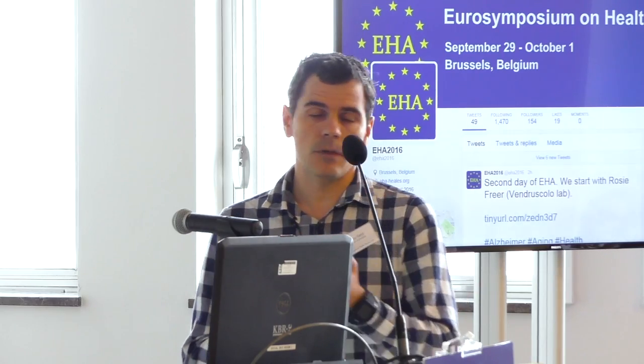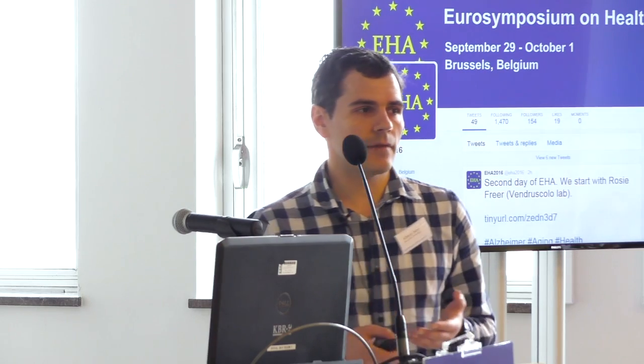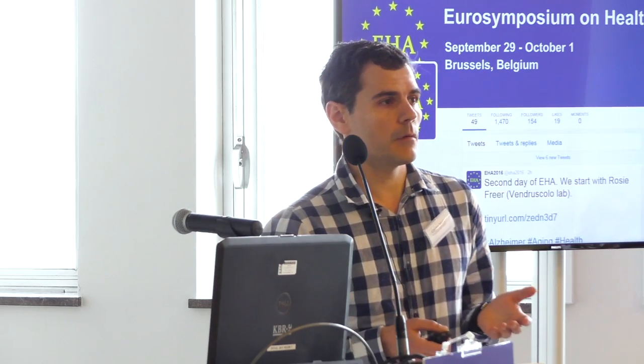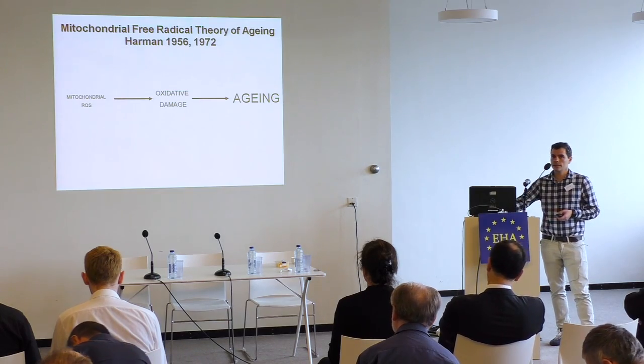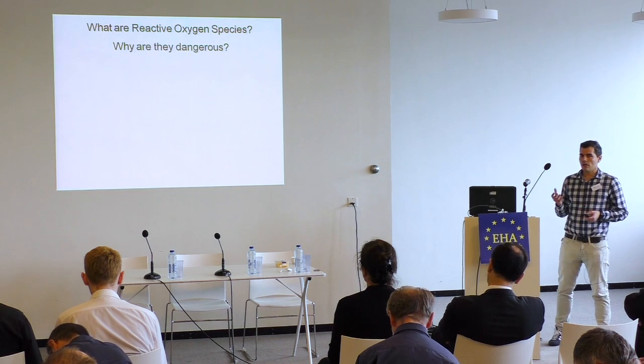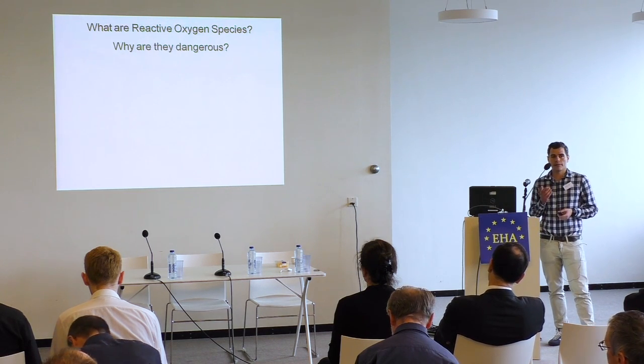A good example is the mitochondrial radical theory of aging. For a long time, it was the most popular theory to explain aging, because it's a very logical theory with a very simple and powerful explanation. It says that reactive oxygen species — free radicals — produced as byproducts of normal metabolism cause the accumulation of oxidative damage, and that accumulation is responsible for aging. But as I said, this is logical but not necessarily true.